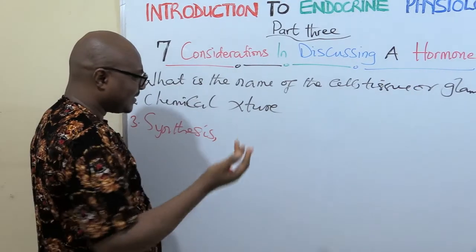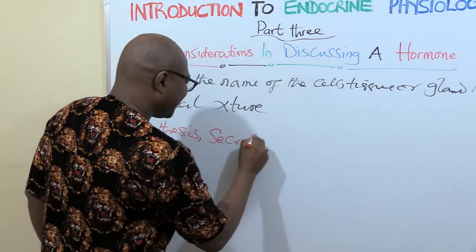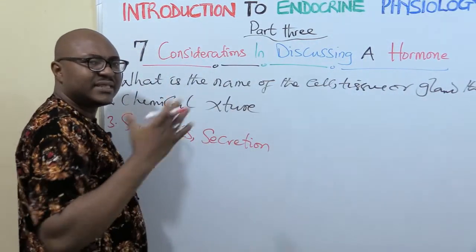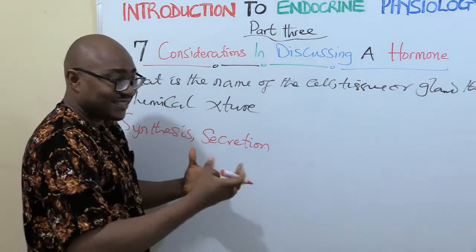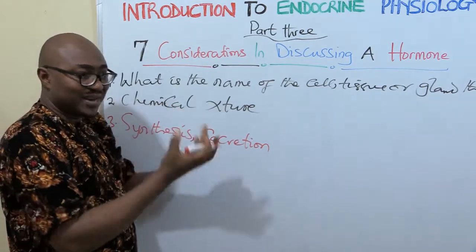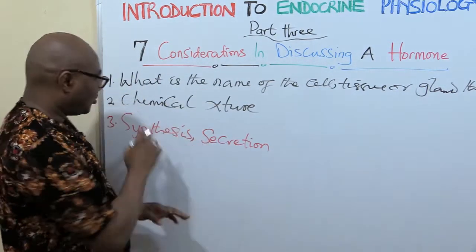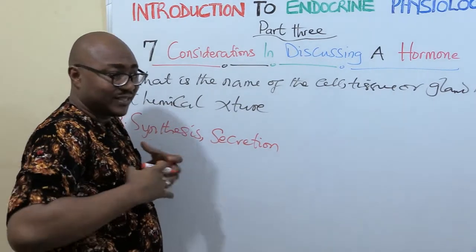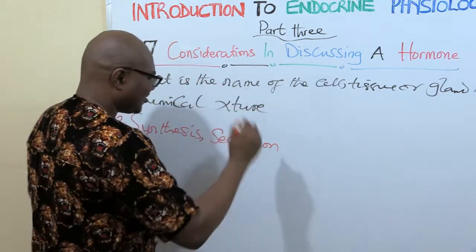Then the next thing is secretion — how is the hormone secreted, and what stimulates the cell to synthesize and secrete it? Usually, steroid hormones are synthesized when they are stimulated, but protein hormones are already synthesized and stored, so what stimulates their release through exocytosis? We talk about the secretion.